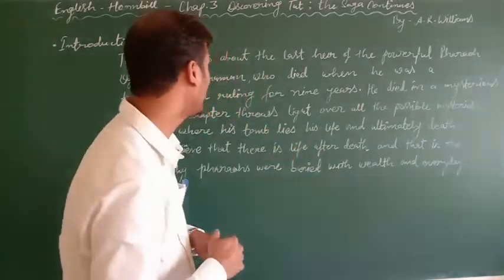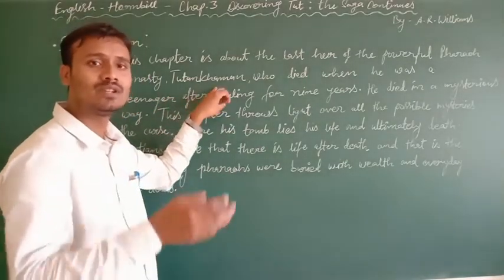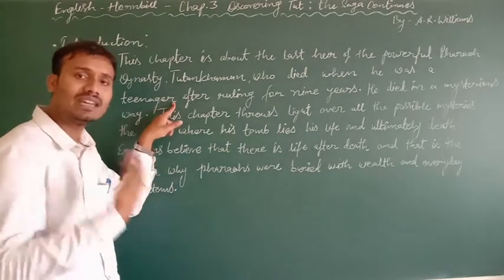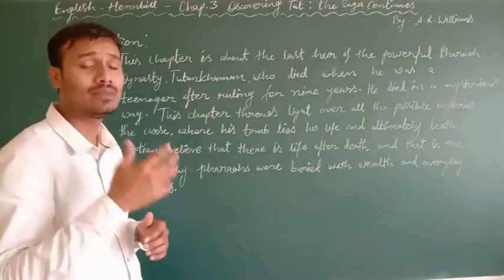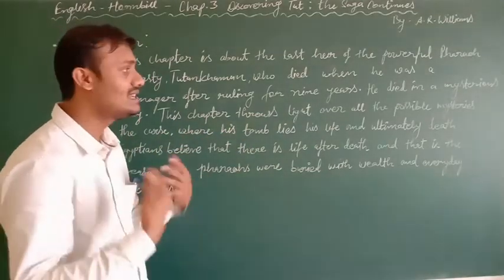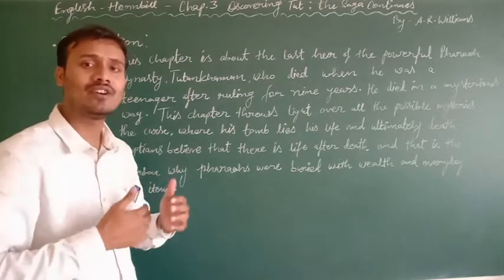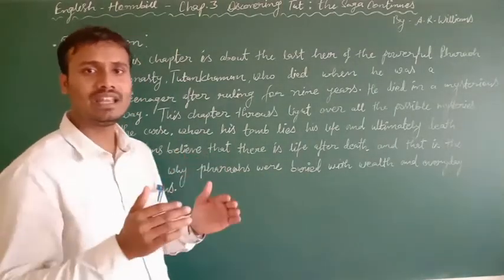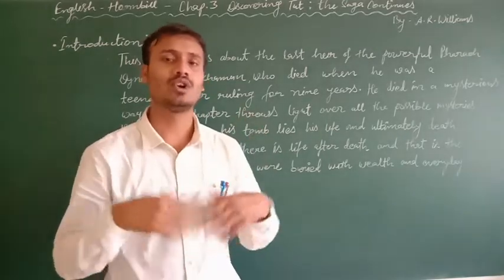This chapter is about the last heir of the powerful pharaoh dynasty, Tutankhamun — who is also known as King Tut. He died when he was a teenager after ruling for nine years. He died in a mysterious way; nobody knows how he died. This chapter throws light over all the possible mysteries — the curse, where his tomb lies, his life, and ultimately his death. Egyptians believe that there is life after death, and that's why the pharaohs were buried with wealth, jewelry, ornaments, and everyday-used items.